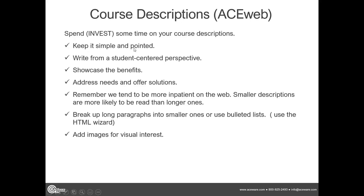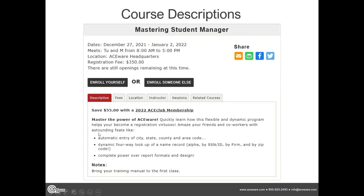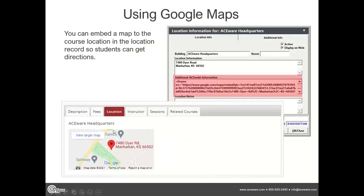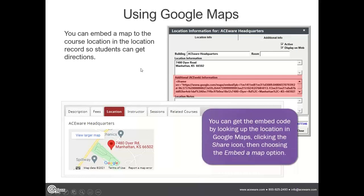Some notes on your course descriptions — invest time in looking at those. Use the HTML wizard so you have bullet points and bolding, which makes descriptions much easier to read. Encourage using Google Map links to put in a location link for courses, especially if they're scattered around. Put your social media links on your website to promote those channels.